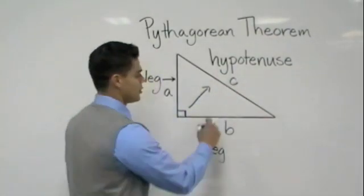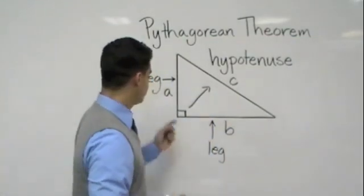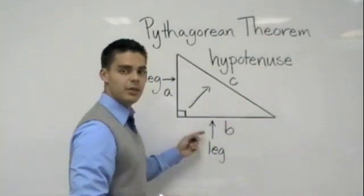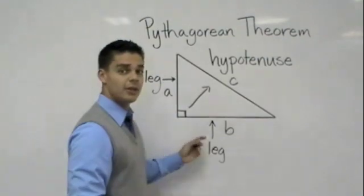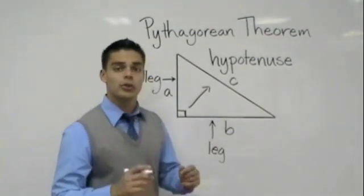Always remember, C, opposite of the 90 degree angle. It doesn't matter whether you put A here and B here, you can put B there and A here. Just remember, A and B are always your shortest legs.